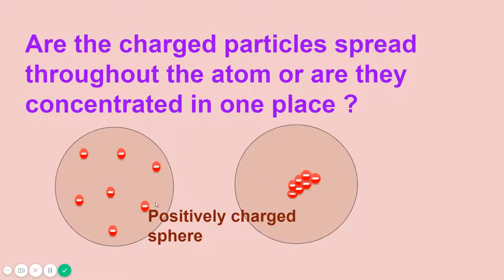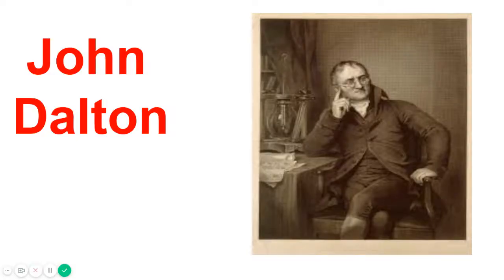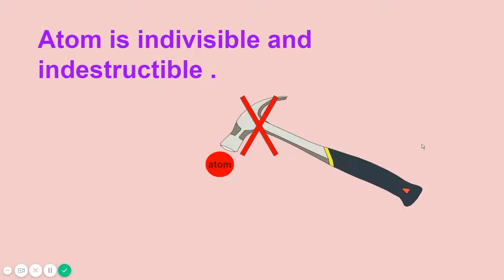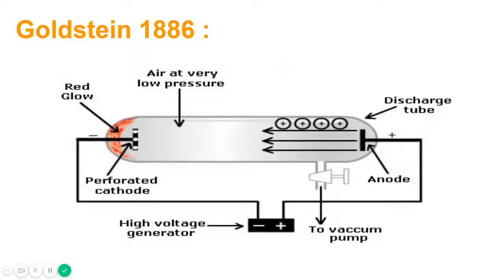Like you can see in this diagram, are they spread throughout the atom or are they concentrated in one place? Dalton's atomic theory stated that an atom was indivisible and indestructible. So this person said that atoms are indivisible and indestructible.